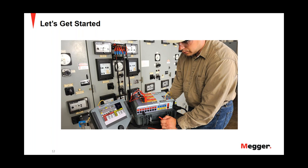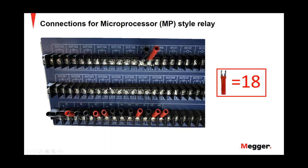Before we get into the software and start creating tests, let me tell you about my setup. I'm using a SMRT 46D and the relay I have is the 351S relay. I'm using fork lugs tied to the back of the relay for my output, and also for my currents, voltages, and power supply. I'm doing a hook straight to the wall for the 120-volt supply. There are 18 total fork lugs I've used for this wiring on this relay.